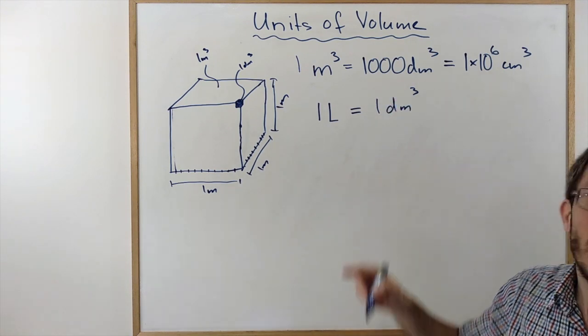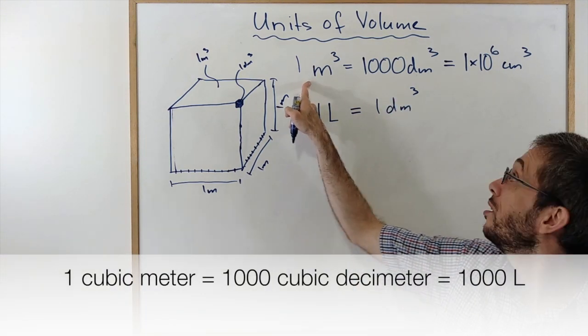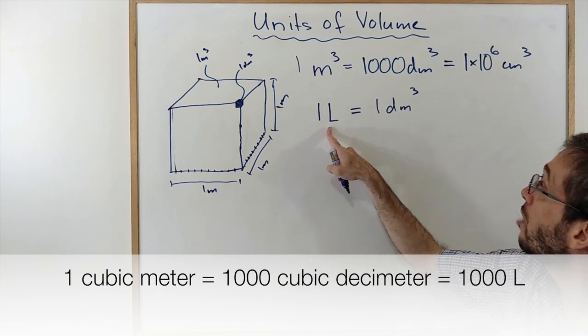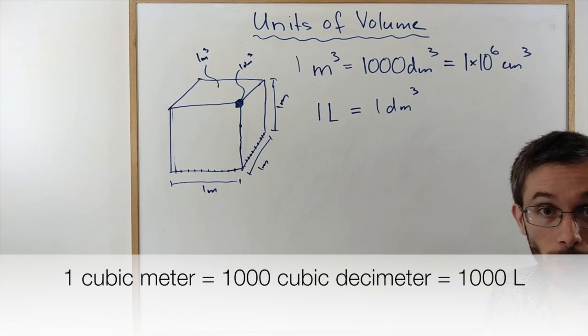So I could set this one equal, that means in 1 cubic meter there are how many liters? 1,000. So 1,000 liters is a cubic meter.